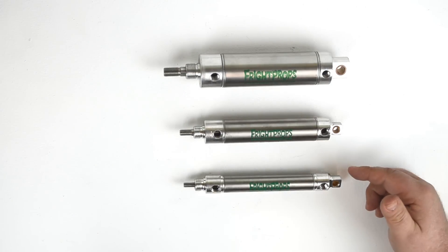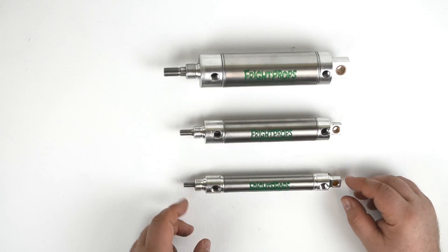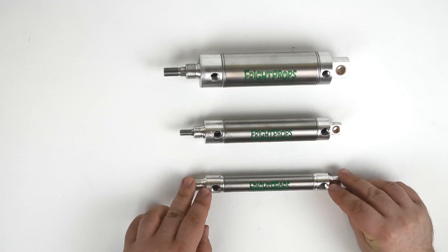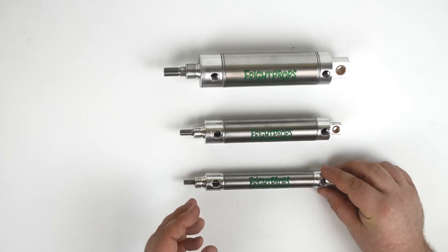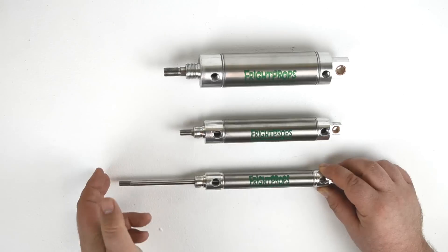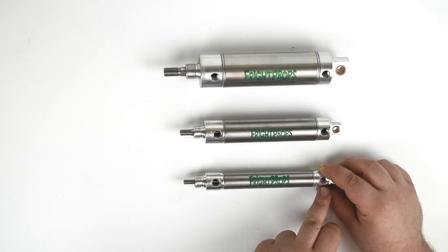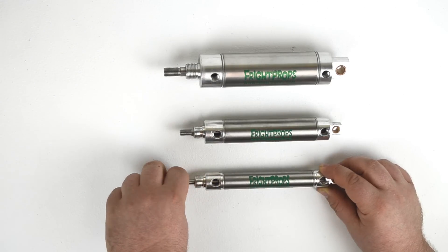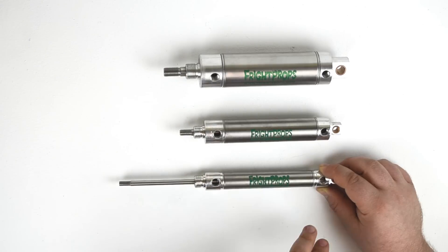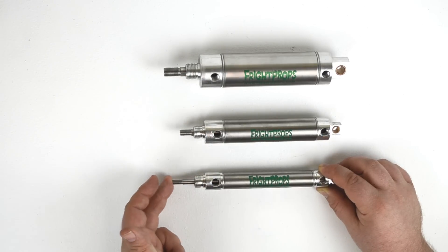The cylinders shown here are what are called double acting cylinders. You'll notice that they each have two air ports. That means that the force of air is used both to extend and to retract the cylinder rod. Air goes into the base port here to push the rod out. And air goes into the port nearest the nose of the cylinder to push the rod back in.